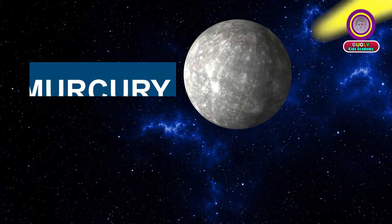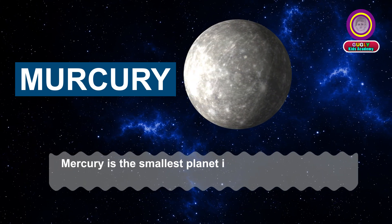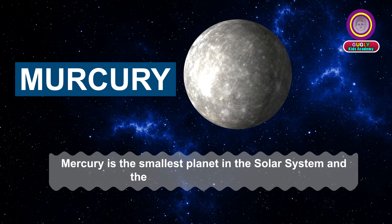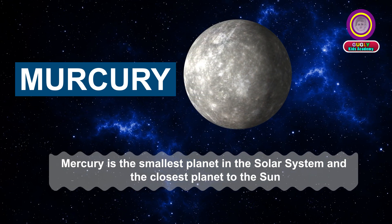Mercury is the smallest planet in the solar system and the closest planet to the sun.